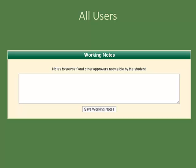Anyone with the ability to access the online academic petition system is able to submit working notes. These notes are not visible to the student, but can be seen by anyone viewing the petition. Since there are many people able to submit notes, please indicate today's date as well as your name next to any comments that you submit.